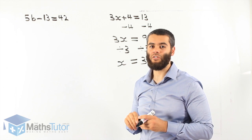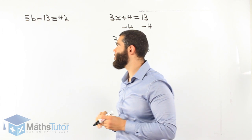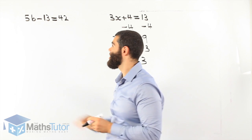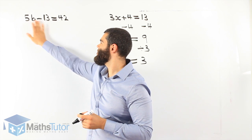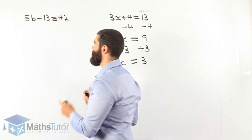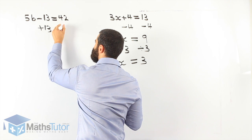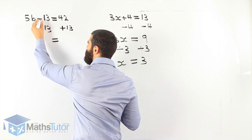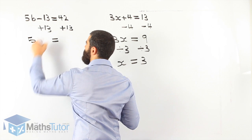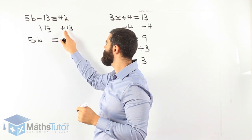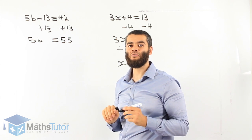Let's do another one: 5b minus 13 equals 42. Again, it's a two-step equation — we have two numerals we want to get rid of. Which one do we start with first? Is it the 5 or the minus 13? Which one is furthest away from b? The minus 13 is further, so we start with that one. Minus 13 becomes plus 13. What we do to one side, we do to the other. Plus 13 here. 5b remains; minus 13 plus 13 is gone. 42 plus 13 is 55, so our equation is now 5b equals 55.